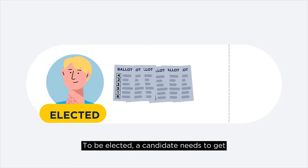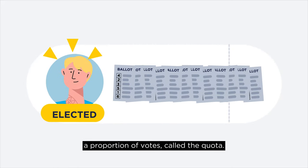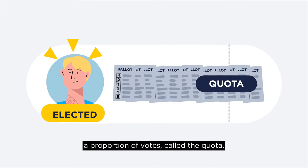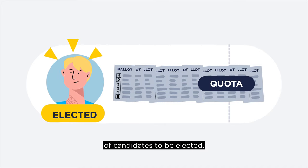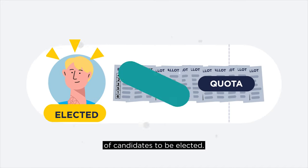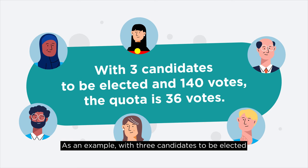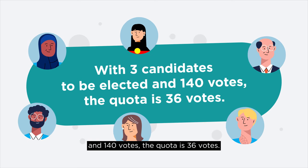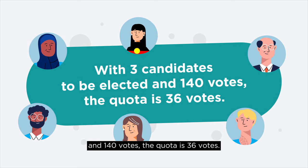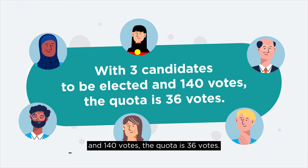To be elected, a candidate needs to get a proportion of votes called the quota. The quota varies according to the number of candidates to be elected. As an example, with three candidates to be elected and 140 votes, the quota is 36 votes.